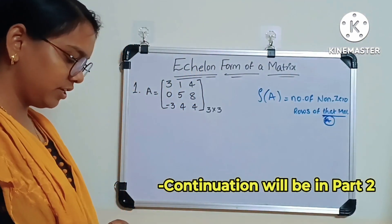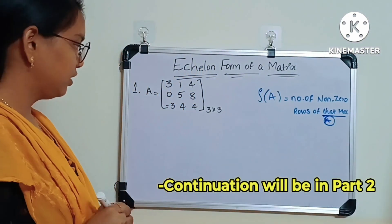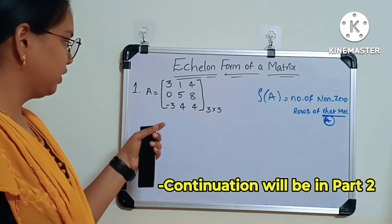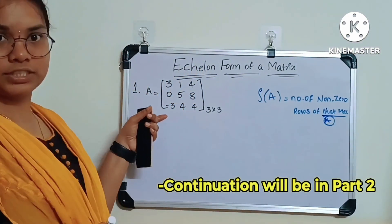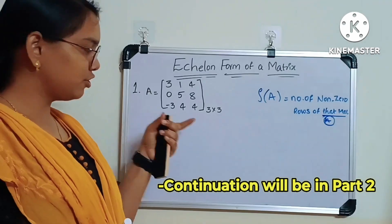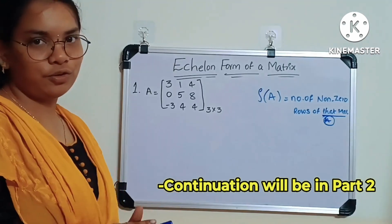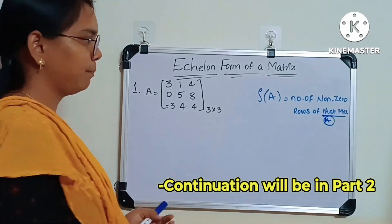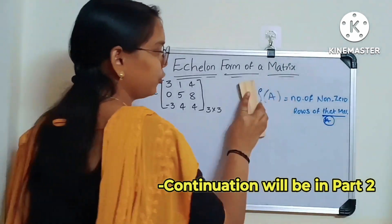This is the definition. Now we will convert this given matrix into the echelon form of a matrix.